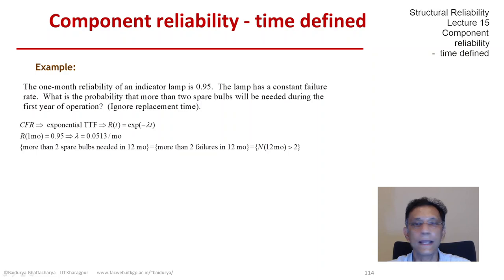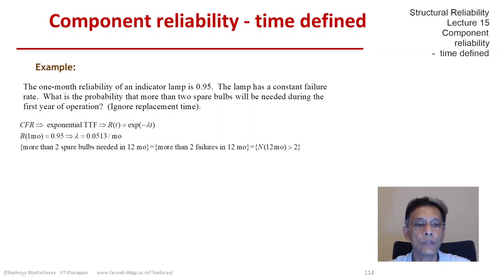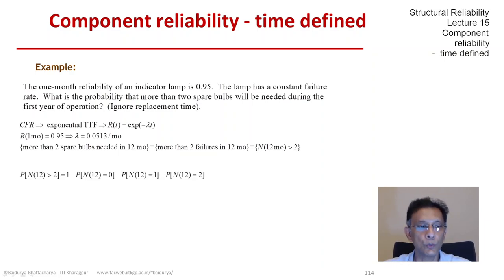The next thing we need is the event that more than two spare bulbs will be needed in a period of 12 months. That means there will be more than two failures in those 12 months, which means the number of Poisson occurrences in those 12 months will be more than two. We can now find the probability of that event.